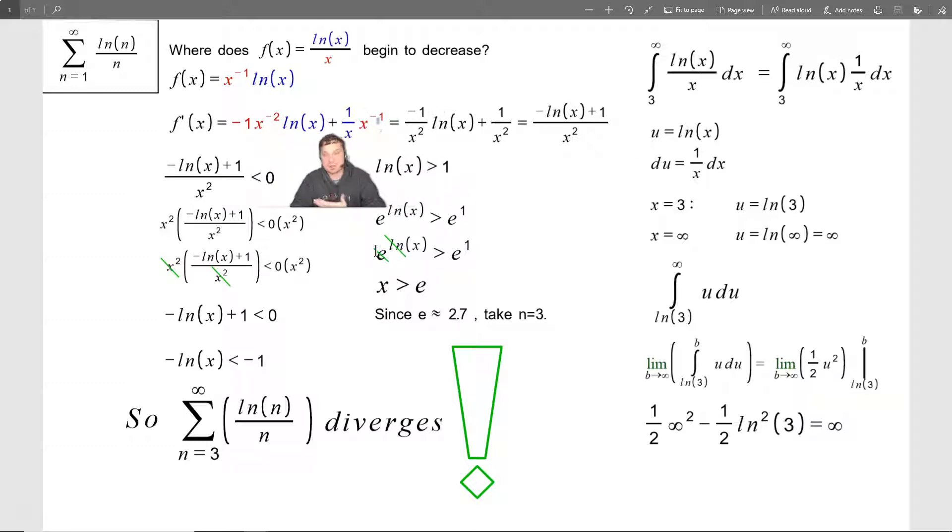And then, so this is the derivative using the product rule basically. And here I'm going to have negative 1 over x squared ln of x plus 1 over x squared after cleaning it up a little bit. And then because the x squared is the same in both, I can put this as negative ln of x plus 1 over x squared.